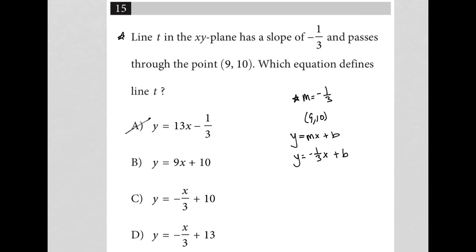We can cross out choice A because that has 13x, showing that 13 is the slope, which is not true. And we can cross out B, which shows that we have 9x, showing that nine is the slope, and that's also not true.